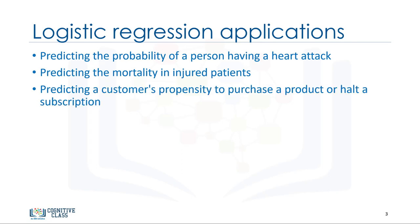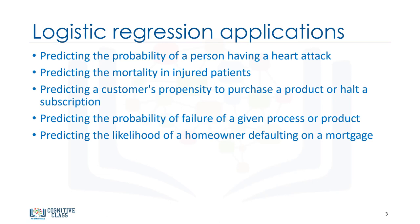In a marketing context, we can use it to predict the likelihood of a customer purchasing a product or halting a subscription, as we've done in our churn example. We can also use logistic regression to predict the probability of failure of a given process, system, or product. We can even use it to predict the likelihood of a homeowner defaulting on a mortgage.